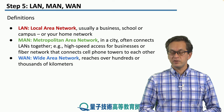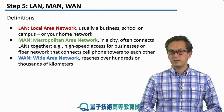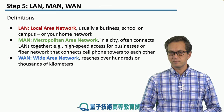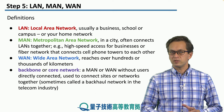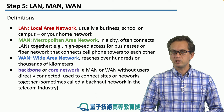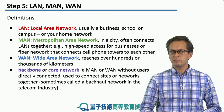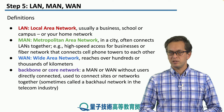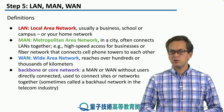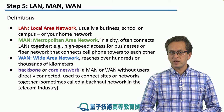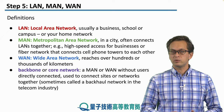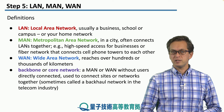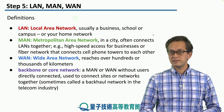If we go one step further, then we hit the Wide Area Network. These reach out over hundreds or thousands of kilometers. And finally, we've got the next type called the backbone or the core network, and this covers both the Metropolitan Area Networks and the Wide Area Networks, but its purpose is very different. There's usually no direct connection to users or to end nodes, and it's used to connect sites or networks together, sometimes called a backhaul network in the telecom industry.